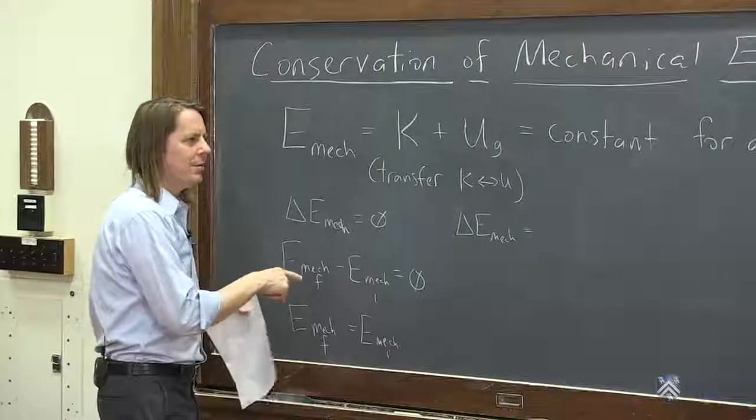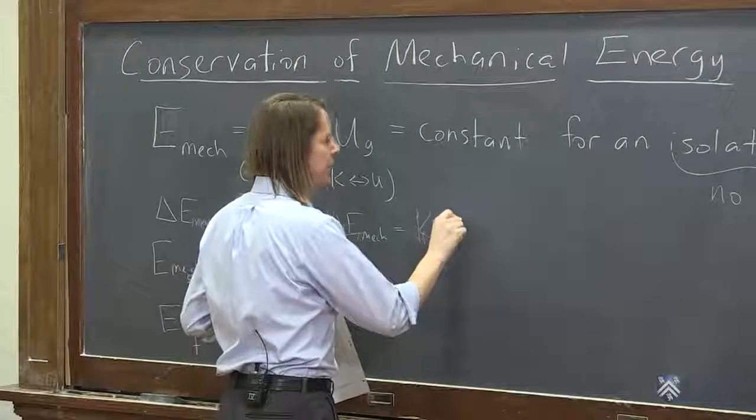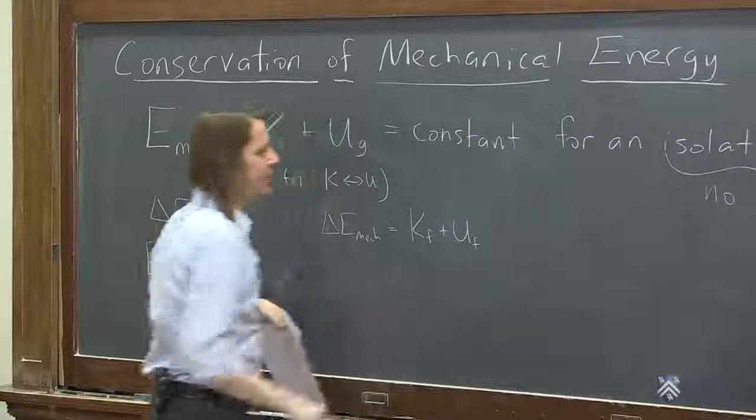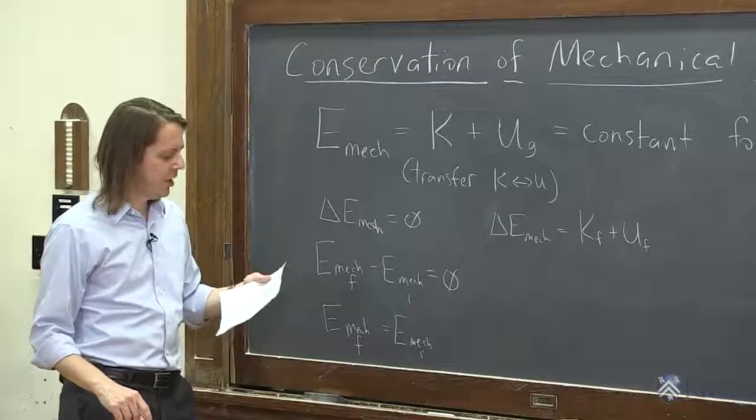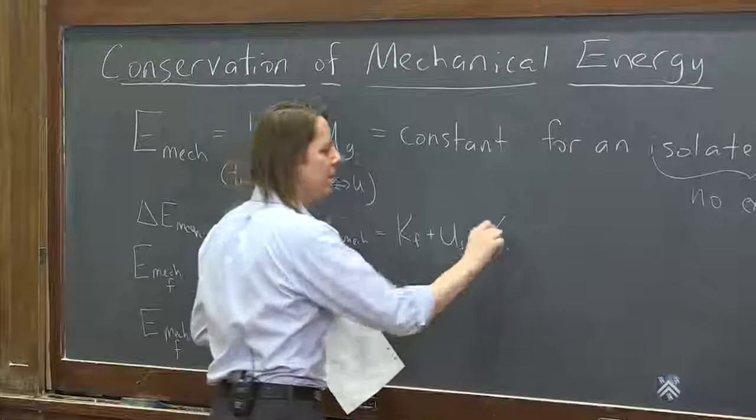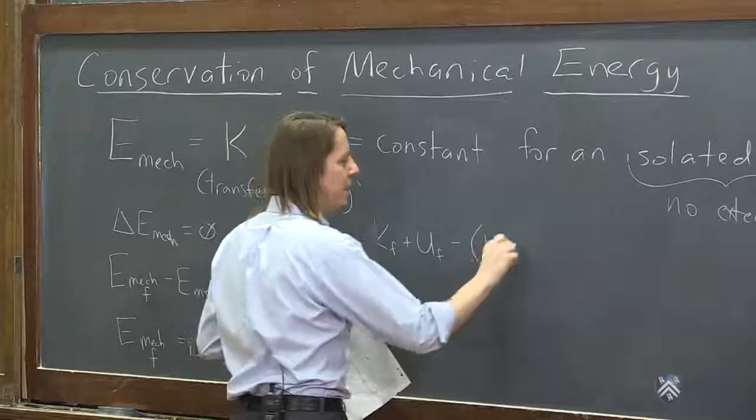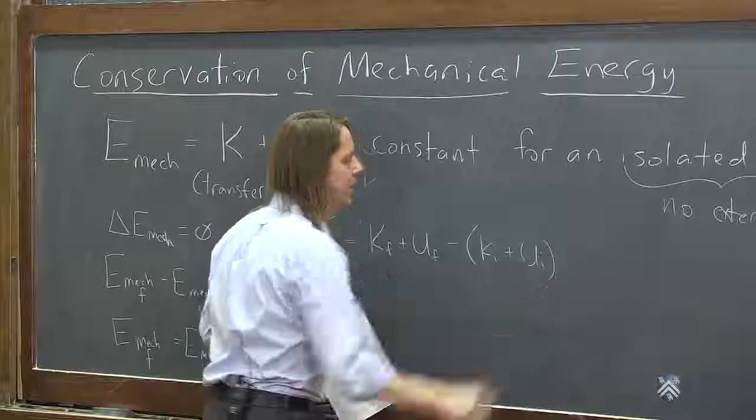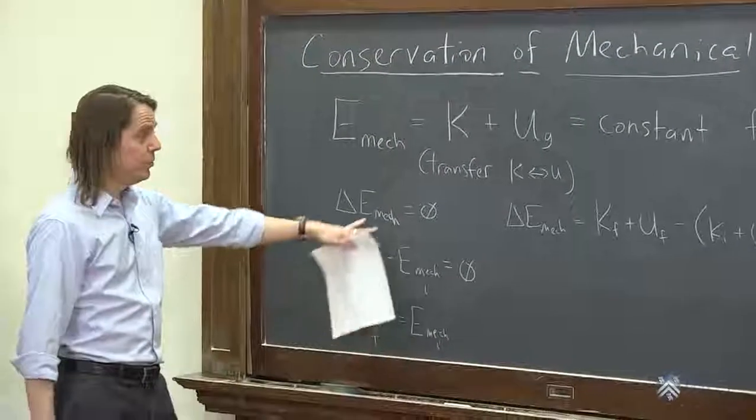So the final mechanical energy is the final kinetic energy plus the final potential energy. I'll leave off the gravitational G for now. We'll just call it UF. And that would be minus the initial kinetic energy, minus the initial mechanical energy. So initial K plus initial U. And that must be equal to zero.